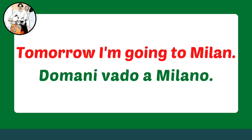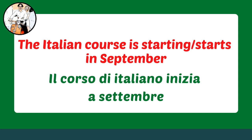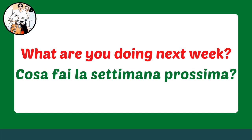'The Italian course is starting in September' in Italian is 'Il corso di italiano inizia a settembre.' As you can see, iniziare is used in the present tense. 'What are you doing next week?' — 'Cosa fai la settimana prossima?' Once again, we're talking about something happening next week, in the future, but we use the present tense.